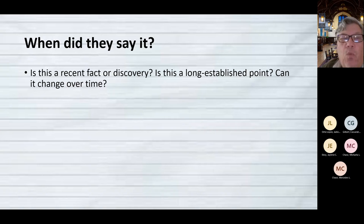Now, back to our main questions. When did they say it? So, is this a recent fact or a discovery? Is this something about current events? Or is this some long-established point that historians have known for centuries? Is this something that can change over time as we learn new things? Because sometimes science does advance and we learn things that we never knew before. And it changes the history books. It changes the science textbooks. So, when a thing was said can be a part of whether or not we can rely on it.